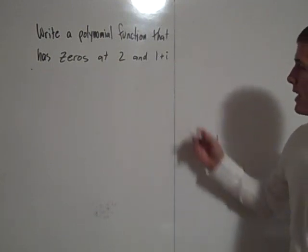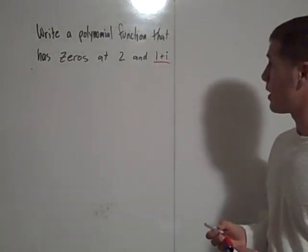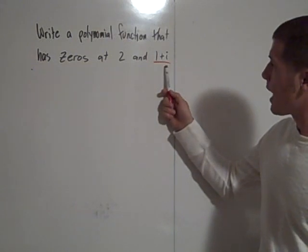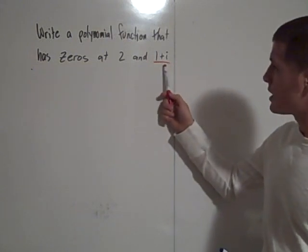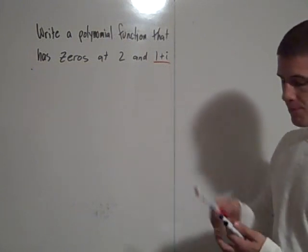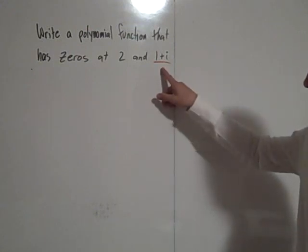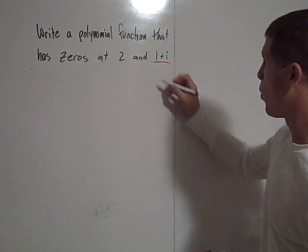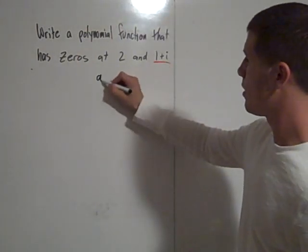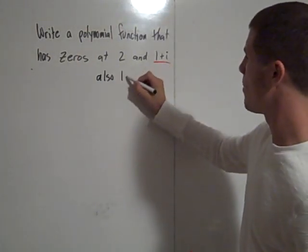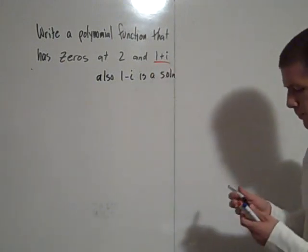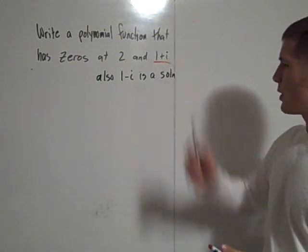Well, the first thing is that this 1 plus i should sort of jump out at you because complex solutions always come in conjugate pairs. So if 1 plus i is a solution, that means that also 1 minus i is a solution. That has to be true. These always come in conjugate pairs.